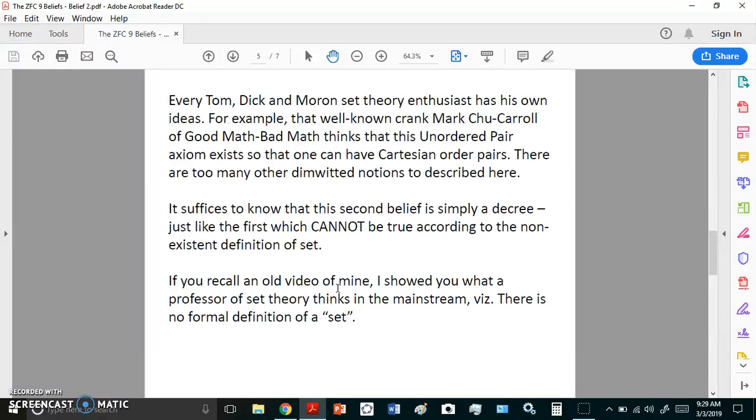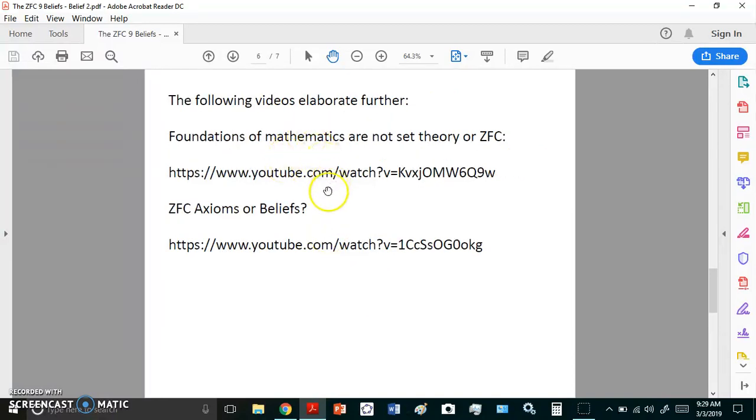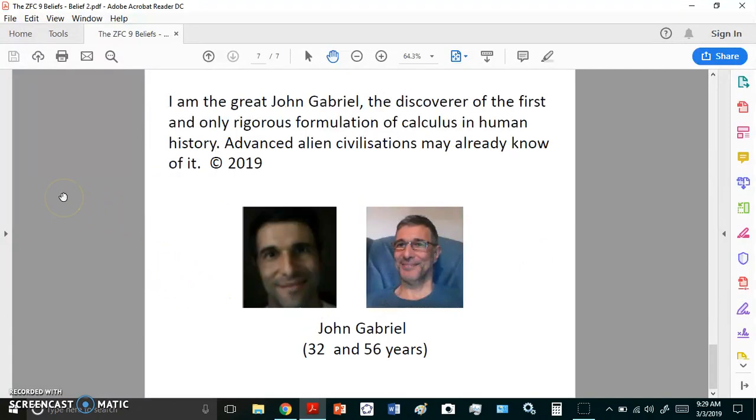It suffices to know that the second belief is simply a decree, just like the first, which cannot be true according to the non-existent definition of set. If you recall an old video of mine, I showed you that there is no formal definition of set, and I've placed the links in here. You can hit the pause button and go to these links to watch my previous videos. I hope you've enjoyed this second in the series of the nine beliefs, and it will start to get even more interesting as we hit the remaining seven beliefs. Of course, there are nine because I include the so-called axiom of choice. It's actually the belief of choice.